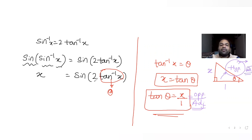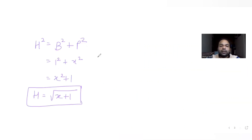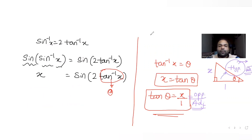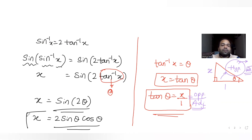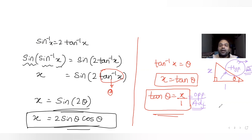Now x = sin(2θ), and applying the double angle formula, sin(2θ) = 2sinθcosθ. So x = 2sinθcosθ.